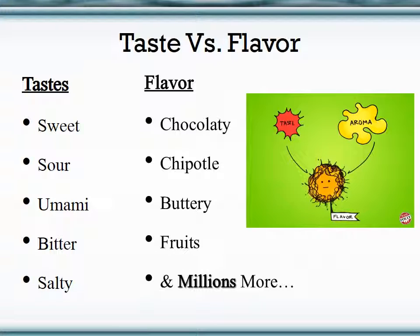Taste and flavor are often used as synonyms, but for our class it's very important to understand that those are two different words. Taste — outlined in the left column — includes sweet, sour, umami, bitter, and salty.